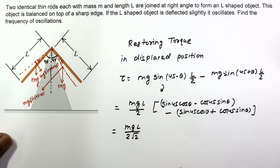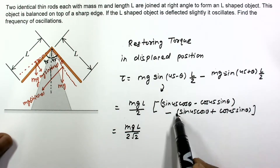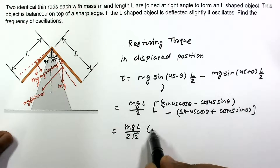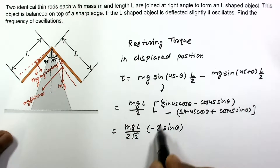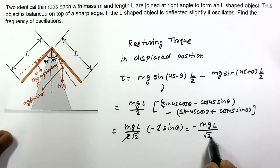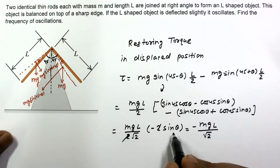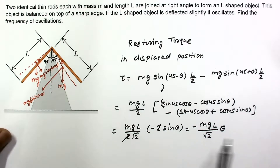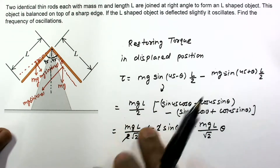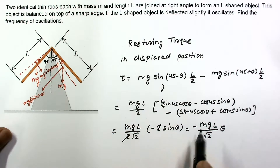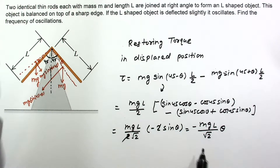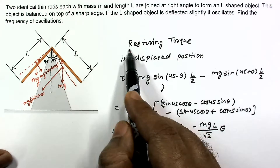So we have MgL/(2√2) times [cosθ − sinθ − cosθ − sinθ]. The cosθ terms cancel, leaving −2sinθ. The 2 cancels, giving −MgL/√2·sinθ. Since theta is very small, sinθ ≈ θ. The negative sign indicates the torque is anti-clockwise — opposite to the clockwise displacement — confirming it is a restoring torque.